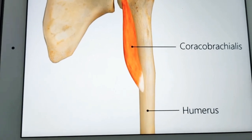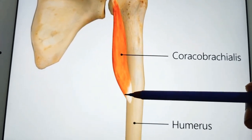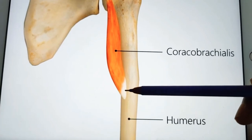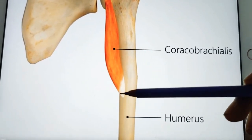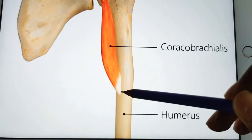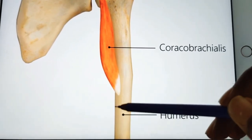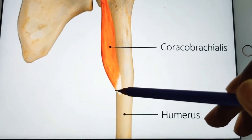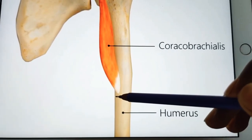The profunda brachii artery runs in the spiral groove and divides into anterior and posterior descending branches at this level. The superior ulnar collateral artery originates from the brachial artery and pierces the medial intermuscular septum with the ulnar nerve here. The nutrient artery of the humerus also enters the bone at this point. For veins, the basilic vein pierces the deep fascia here, and the two venae comitantes of the brachial artery unite to form one brachial vein at this site.